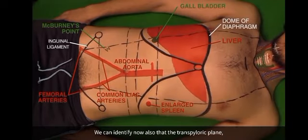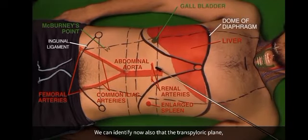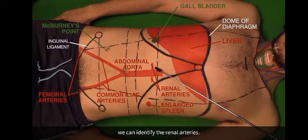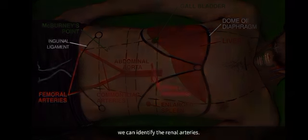We can also identify at the trans-pyloric plane the renal arteries.